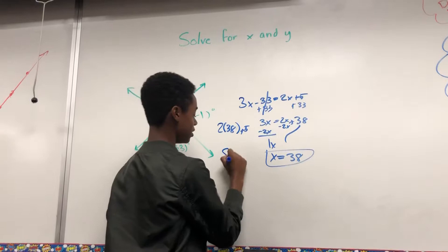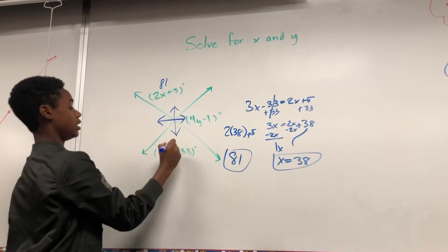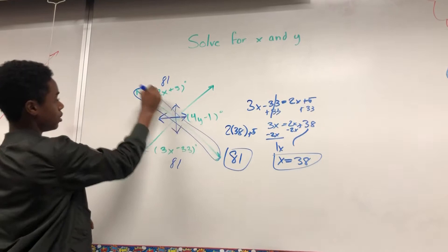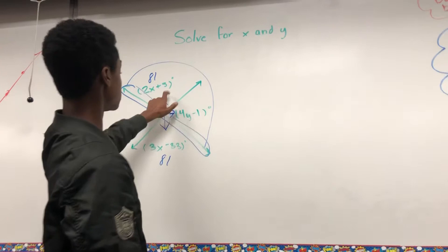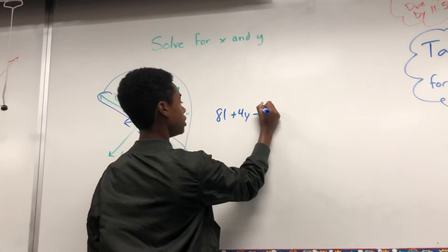Okay, so now 81 is this one and this one. So now this line right here, all these here, needs to equal 180. So I'm going to add and put these together to 180. It will be 81 plus 4y minus 1 equals 180.